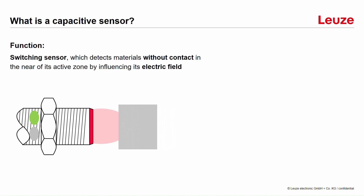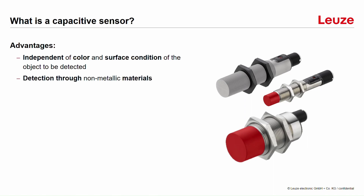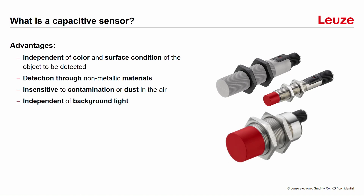You can see this now in a short animation. The main advantages of capacitive sensors are that they are completely independent of the color and also the surface of the detection material. Besides, they are able to detect even through walls under certain conditions. They are also very insensitive to contaminations in the air, for example dust. And what is also very important, they work completely independent of any kind of background light.